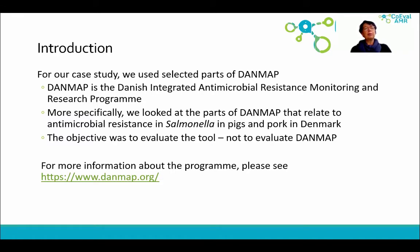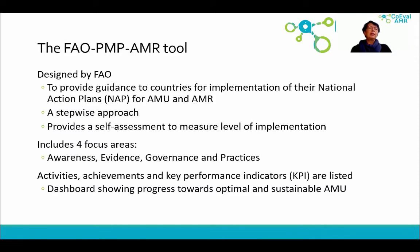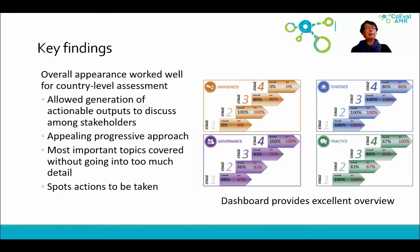If you're interested in knowing more about DANMAP, please see the link on the slide. The FAO PMP AMR tool is designed by FAO. It provides guidance to countries for implementation of their national action plans for antimicrobial use and resistance. It is a step-wise approach, and it provides a self-assessment to measure the level of implementation. There are four focus areas: awareness, evidence, governance, and practices. For each of these, specific activities, achievements, and key performance indicators are listed.